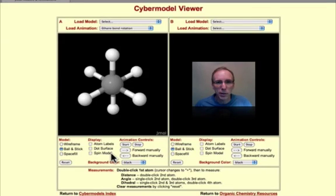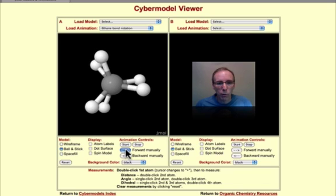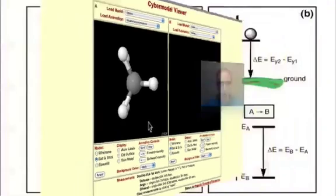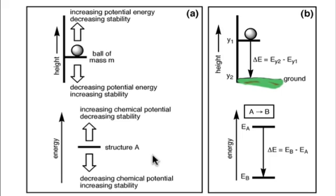The energy of a molecule depends on the position of its atoms. In this model of ethane, the staggered conformation is more stable than the eclipsed conformation. The positions of atoms in a molecule define a structure. Let's call it structure A.